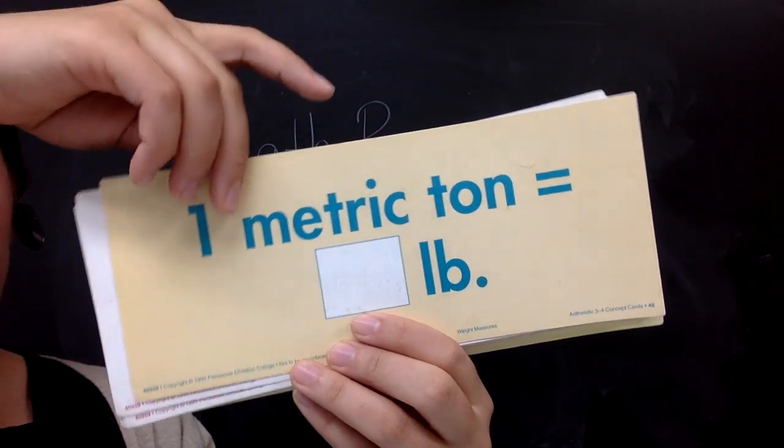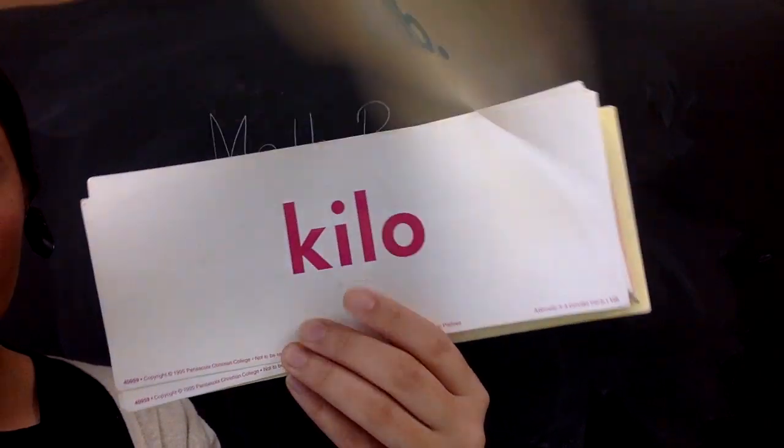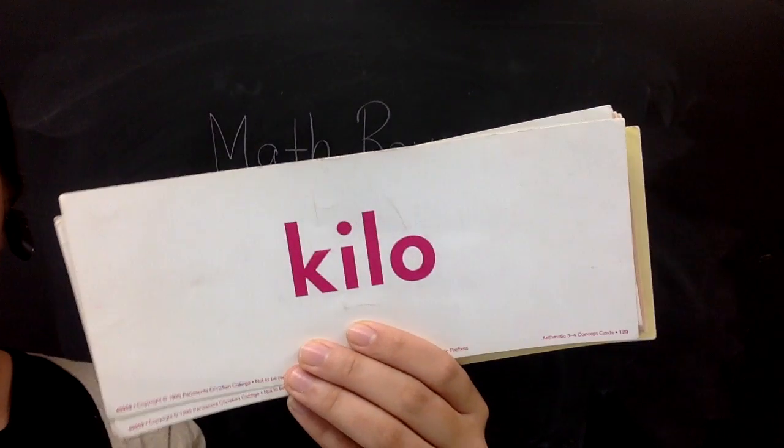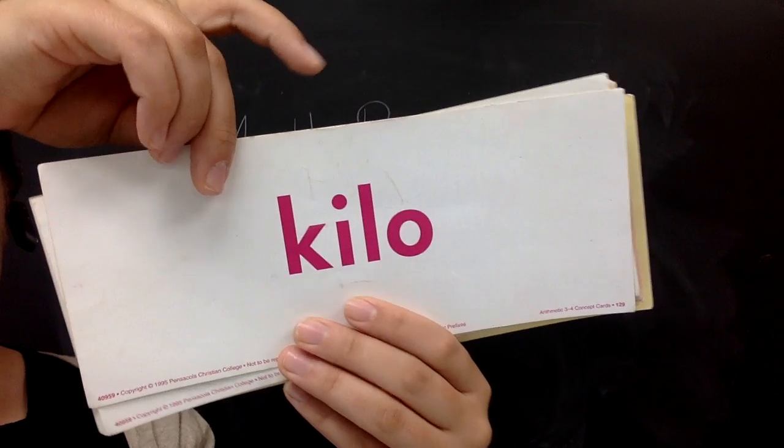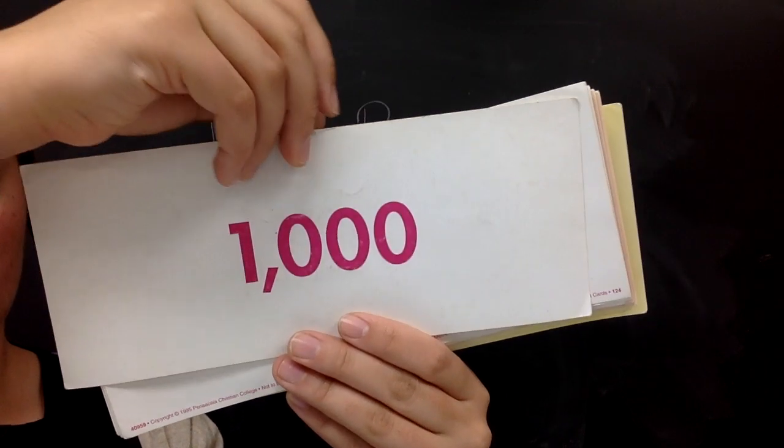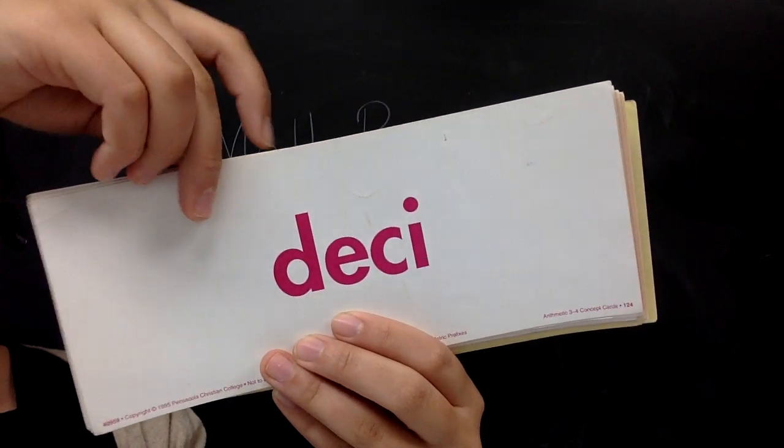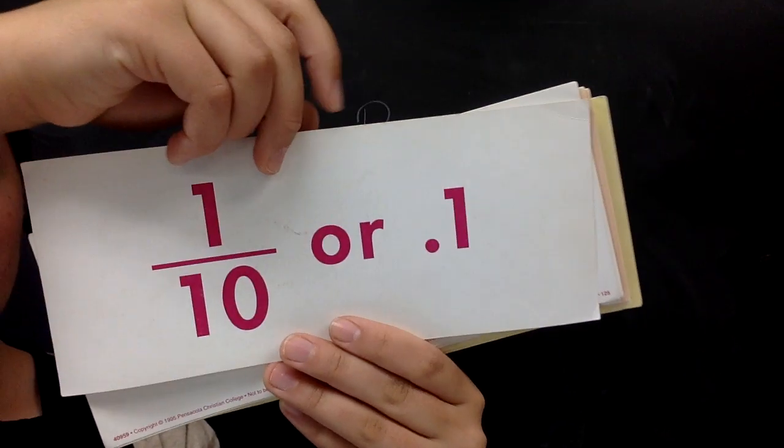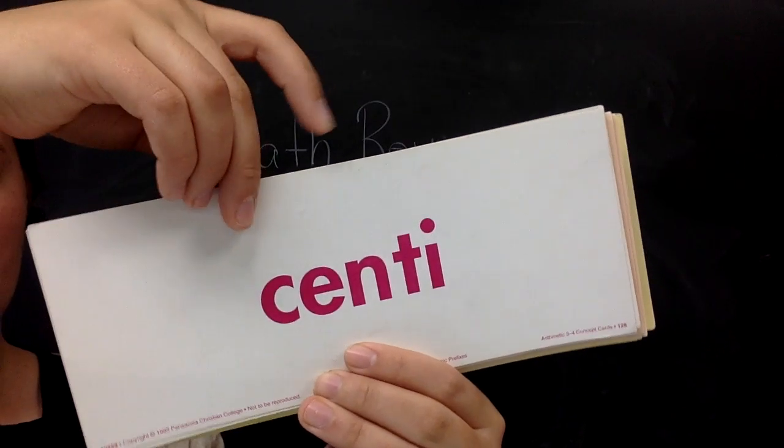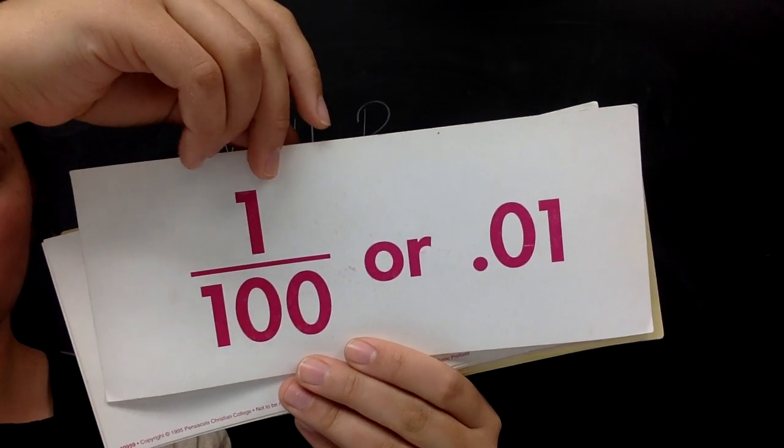One metric ton equals how many pounds? 2,200. What does kilo mean? 1,000. Deca? 10. Centa? 1/100.